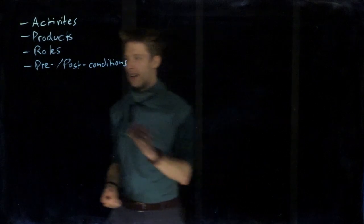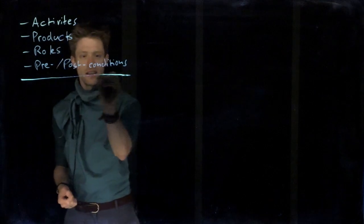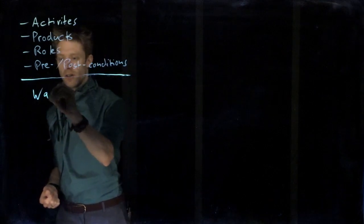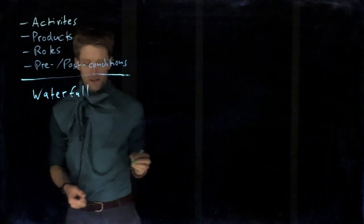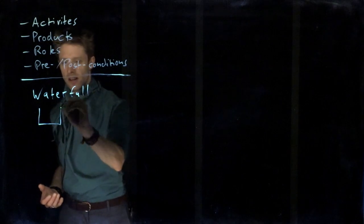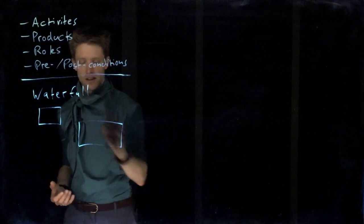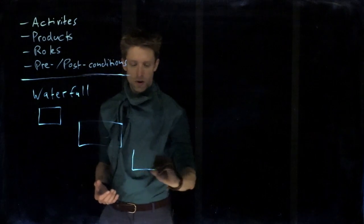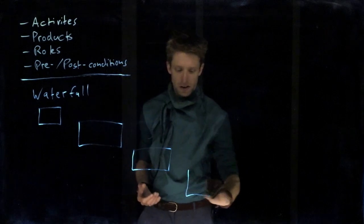And probably the most well-known process model is the so-called waterfall model. So the waterfall model describes a process in which things happen after each other and it is often drawn like this. It goes from top to bottom, it flows like a waterfall essentially.